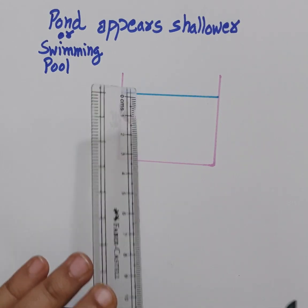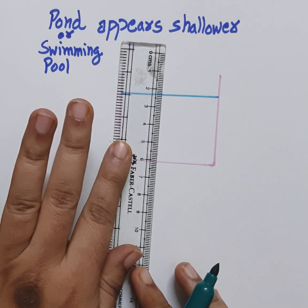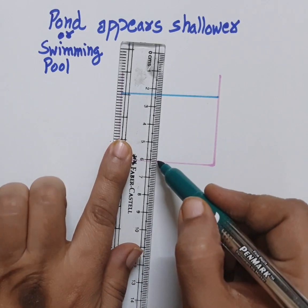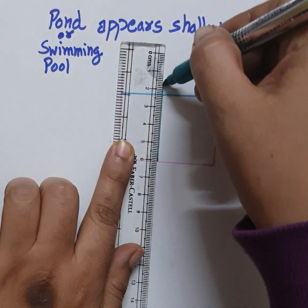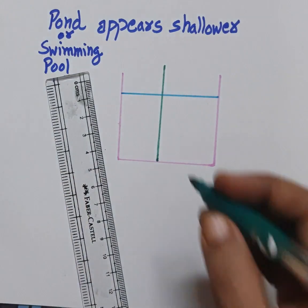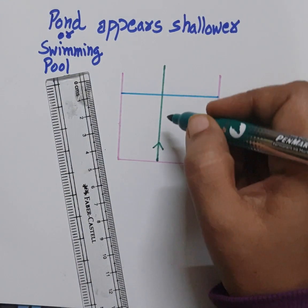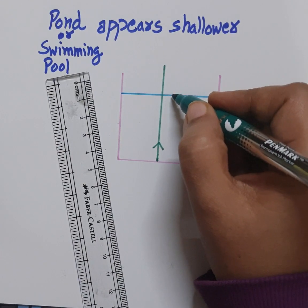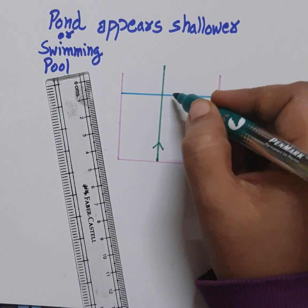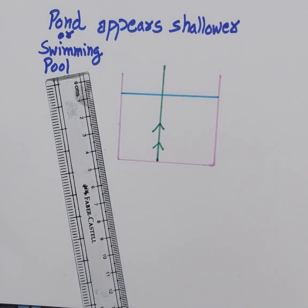One ray from the bottom of the pond will go straight. As we have done in the rules, when the angle of incidence is 0 degrees, or it is perpendicular to the surface of the water, then it will go straight without any refraction. This is the first ray.